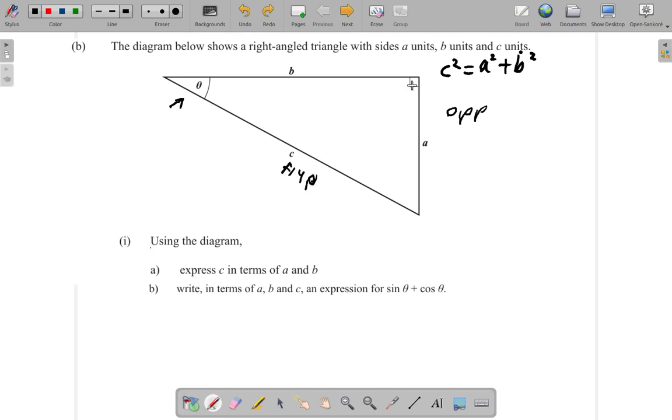So A is the opposite, and C is the hypotenuse. C doesn't come anywhere near the right angle, which is here. So, sine theta is opposite over hypotenuse, which is A over C.